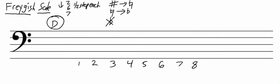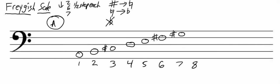Let's do one more example. This time, we will write the key of A. We will start with our A major scale: A, B, C-sharp, D, E, F-sharp, G-sharp, A. The second note is B, so we're going to make that B-flat. The sixth note is F-sharp, so we will erase the sharp and make that just an F-natural. The seventh note is G-sharp, so we will erase that sharp and make it a G-natural. And there we have our A Fregish scale.